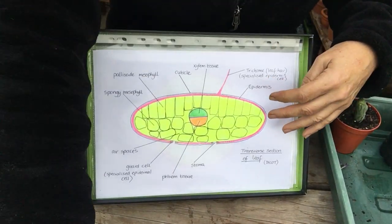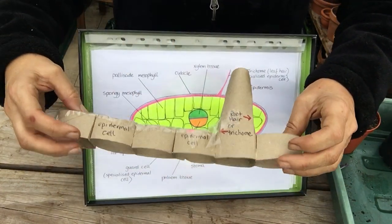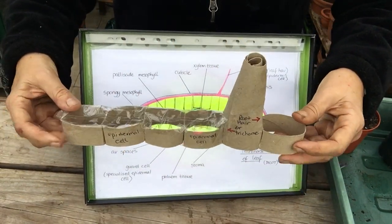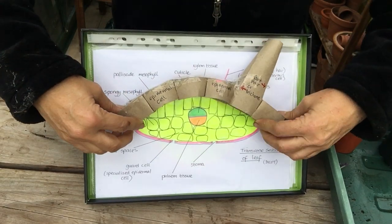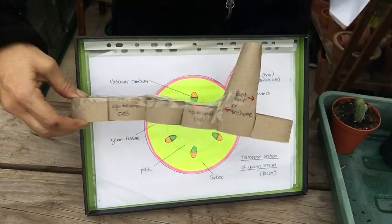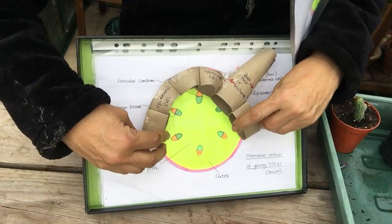So let's have a look at our models. This represents the epidermis, it will be going all the way around the edge, same here, all the way around the edge like that.